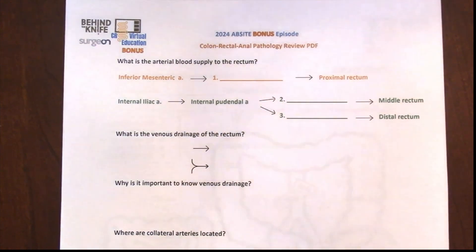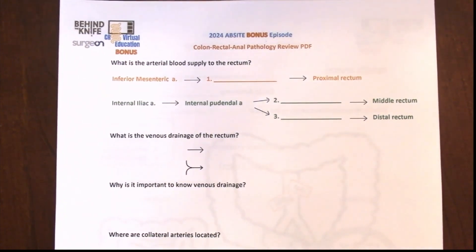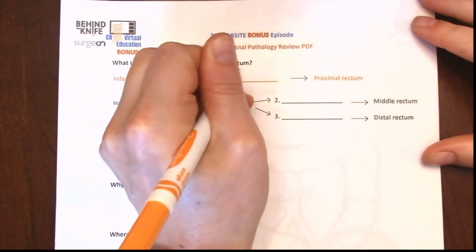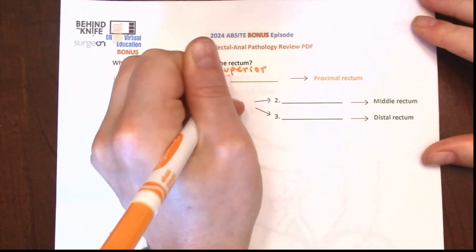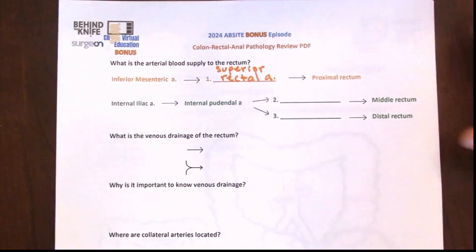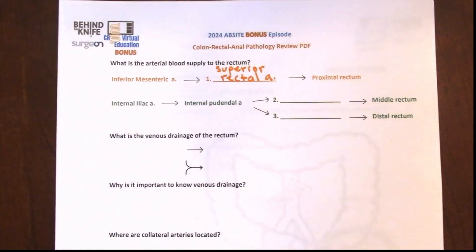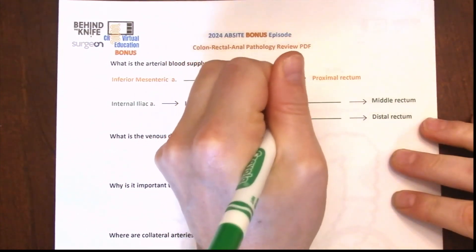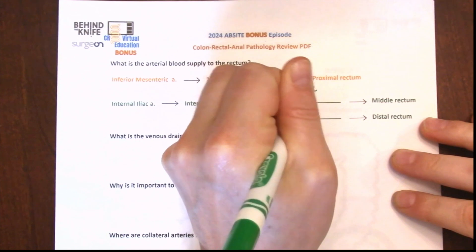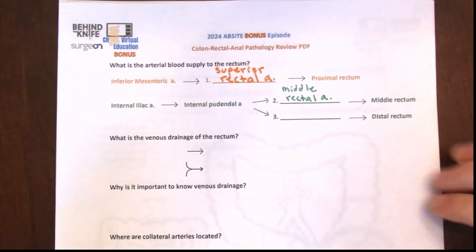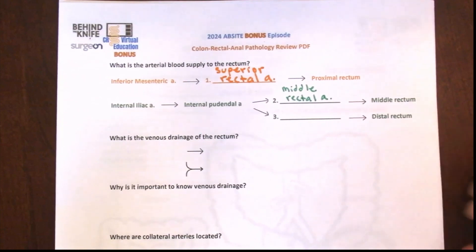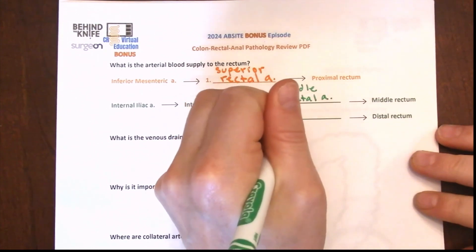For the arterial supply to the rectum, think about it in three portions. The superior rectal artery, a branch off the IMA, supplies the proximal rectum. The middle rectal artery is a branch off the internal iliac artery and the internal pudendal artery, supplying the middle rectum. The inferior rectal artery is a branch of the internal pudendal artery and supplies the inferior rectum.